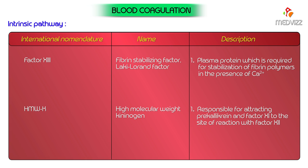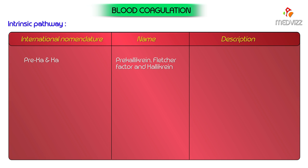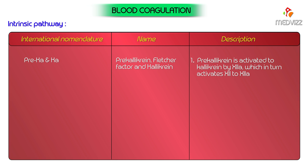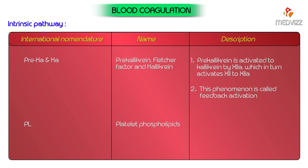This is possible because high molecular weight kininogen, like factor 12, is attracted towards negatively charged surfaces which provide the site of reactions. Pre-kallikrein (also known as Fletcher factor) is activated to kallikrein by factor 12a, which in turn activates factor 12 to factor 12a — a phenomenon called feedback activation of factor 12. Platelet phospholipids are essential for clotting in the absence of tissue extract.